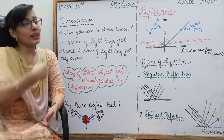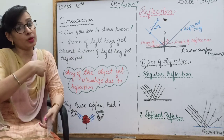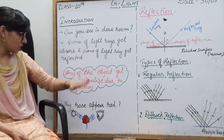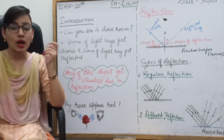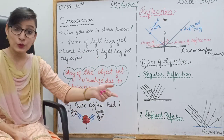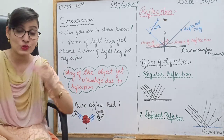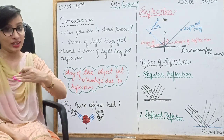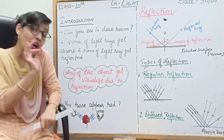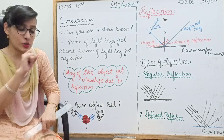Any object gets visualized to us due to reflection. Any object becomes visible to us because of reflection. When light rays fall on that object and reflect back to our eyes, we can see it. So if there is a one-word question — why does any object get visualized to us? The answer is: due to reflection of light.